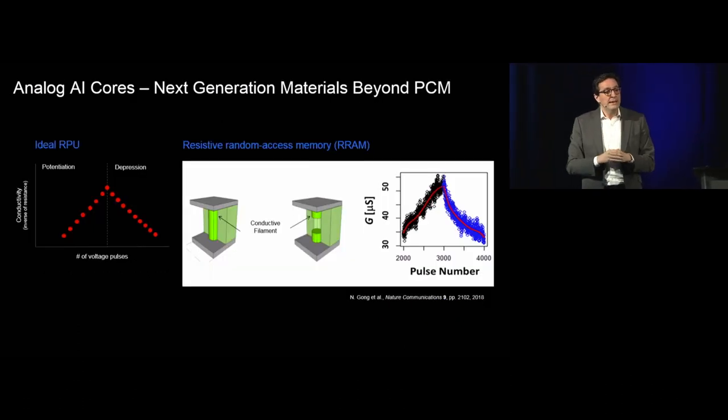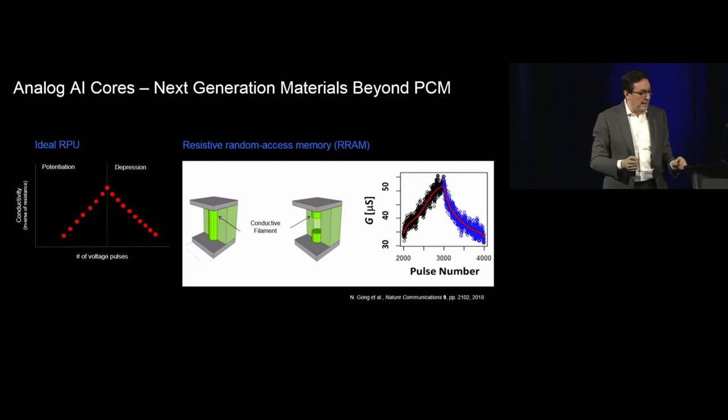We're also working, leveraging our expertise in the physical sciences, about creating this ideal RPU that has these symmetric switching capabilities. Here's a recent result about actually using our expertise that we develop creating hafnium oxide dielectrics as part of our high-k metal gate efforts in the 90s and 2000s to be able to now create devices with filaments where you get this symmetric switching. This is an experimental result that you're seeing on the right-hand side.